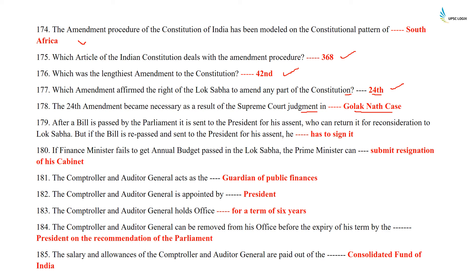After a bill is passed by Parliament, it is sent to the President for his assent. Who can return it for reconsideration to the Lok Sabha? But if the bill is repassed and sent to the President for his assent, he has to sign it. If the Finance Minister fails to get the annual budget passed in the Lok Sabha, the Prime Minister can submit the resignation of his cabinet. The Comptroller and Auditor General acts as a guardian of public finances.